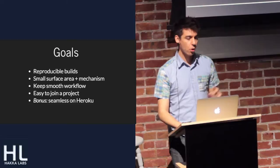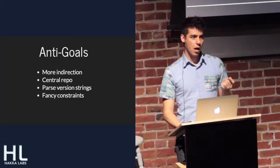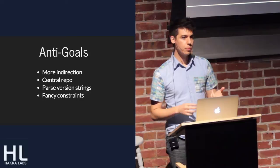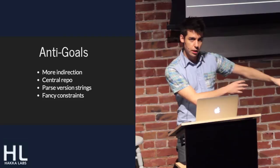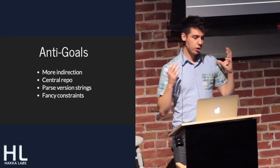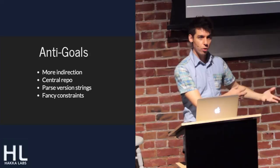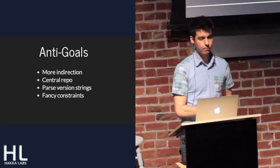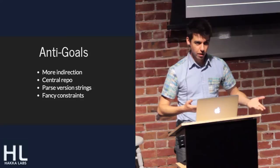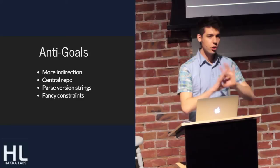Anti-goals — things I'm really not trying to do and want to avoid. One is: I don't want to add another level of indirection. Sometimes when people talk about the problem of a package getting a new maintainer or moving to a new location, a common reaction is: 'Well, if we had a centralized repository of names, and the tool would look up in this central repo where to get the code from, that could solve the problem.' But as the saying goes — every problem in computer science can be solved by adding another level of indirection, except for the problem of too many levels of indirection.